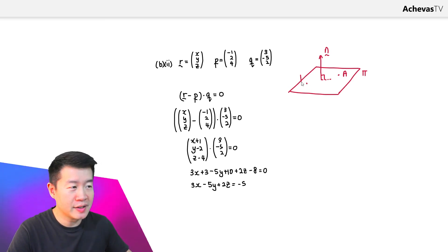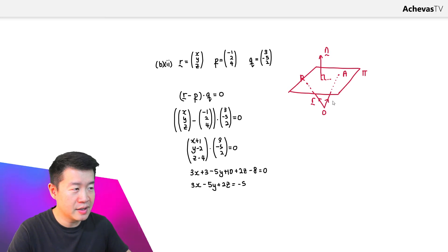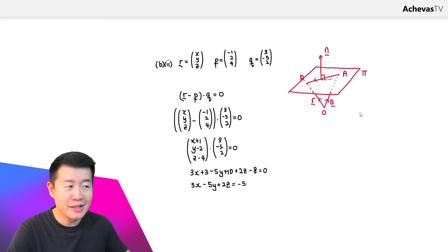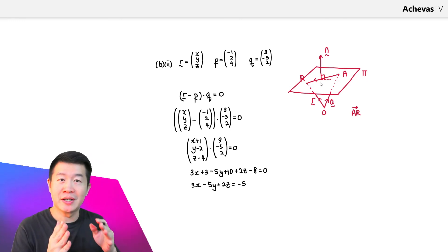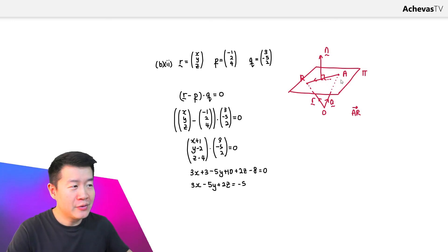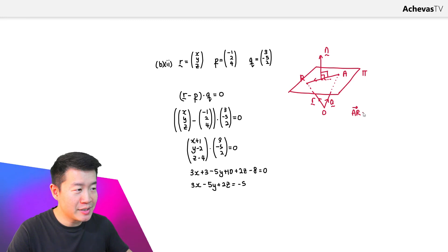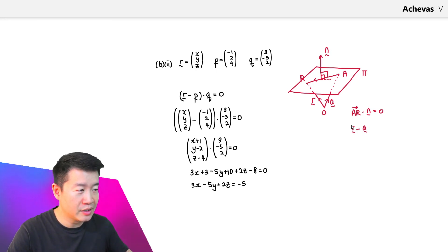We have a variable point R with position vector r, and the fixed point A with position vector a, both referenced to the origin. The vector AR goes from A to R. Because R is defined to lie on the plane pi, AR will always be parallel to the plane pi, which means AR will always be perpendicular to n. Therefore AR dot n equals zero, and since AR equals r minus a, we get (r minus a) dot n equals zero.